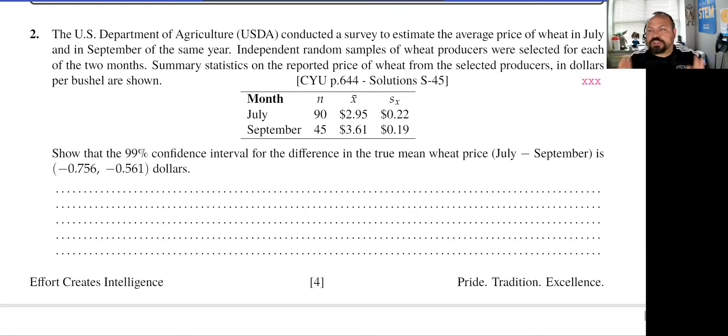We're going to focus on building the confidence interval. The U.S. Department of Agriculture conducted a survey to estimate the average price of wheat in July and in September of the same year. Independent random samples of wheat producers were selected for each of the two months. Summary statistics on the reported price of wheat from the selected producers in dollars per bushel are shown.